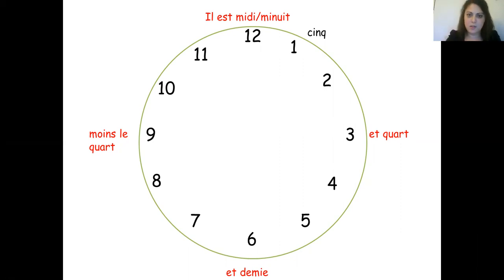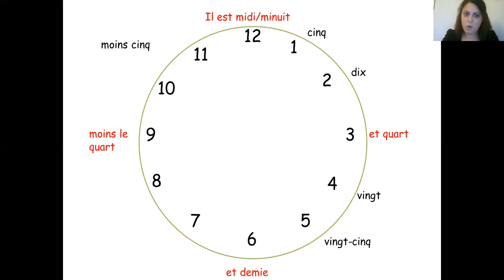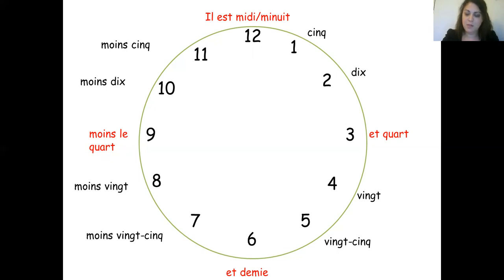On the right-hand side, the first half from twelve to six: if you want to say five past one, 'il est une heure cinq'; 'une heure dix' is ten past one; 'une heure vingt' is twenty past one; 'une heure vingt-cinq' is twenty-five past. Then on the left-hand side we use 'moins': 'moins cinq' is minus five; 'moins dix' is minus ten; 'moins vingt' is minus twenty; 'moins vingt-cinq' is minus twenty-five.